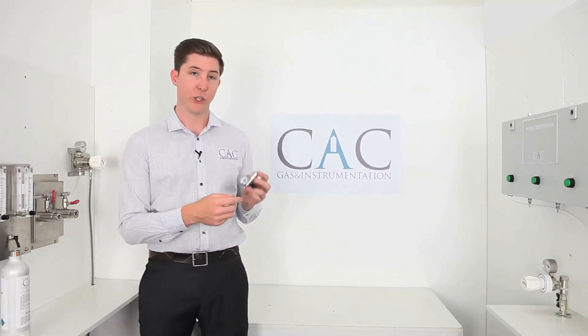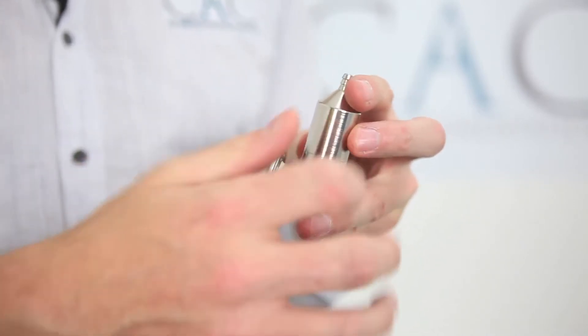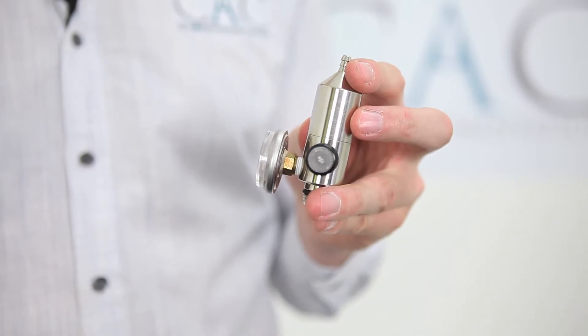Firstly, ensure your regulator is in the on position by twisting this knob counterclockwise. This is to prevent any cross-contamination from previous use.